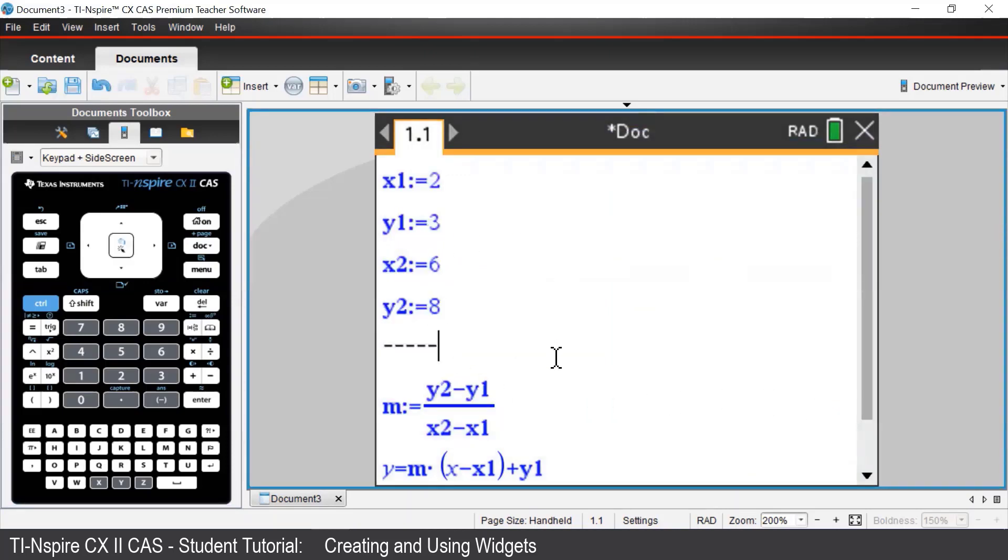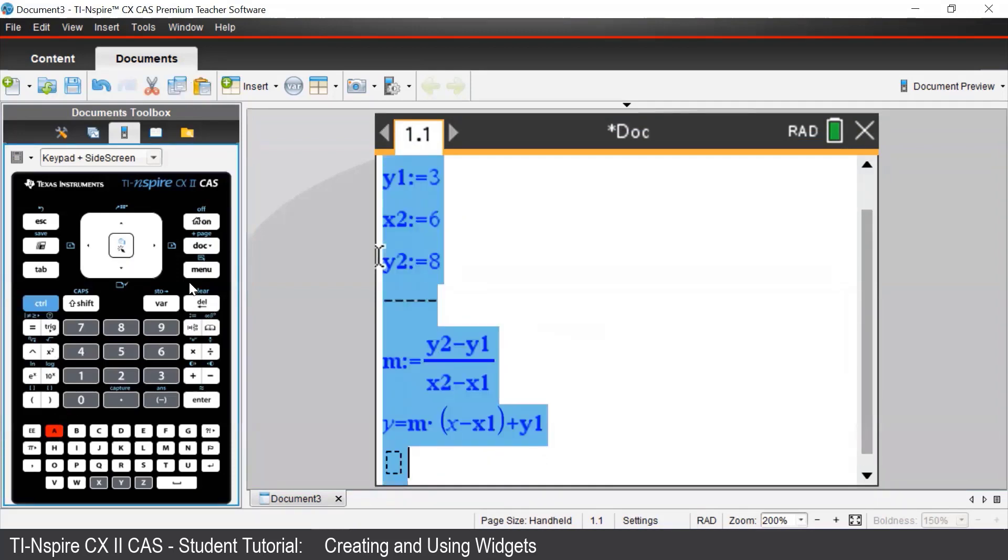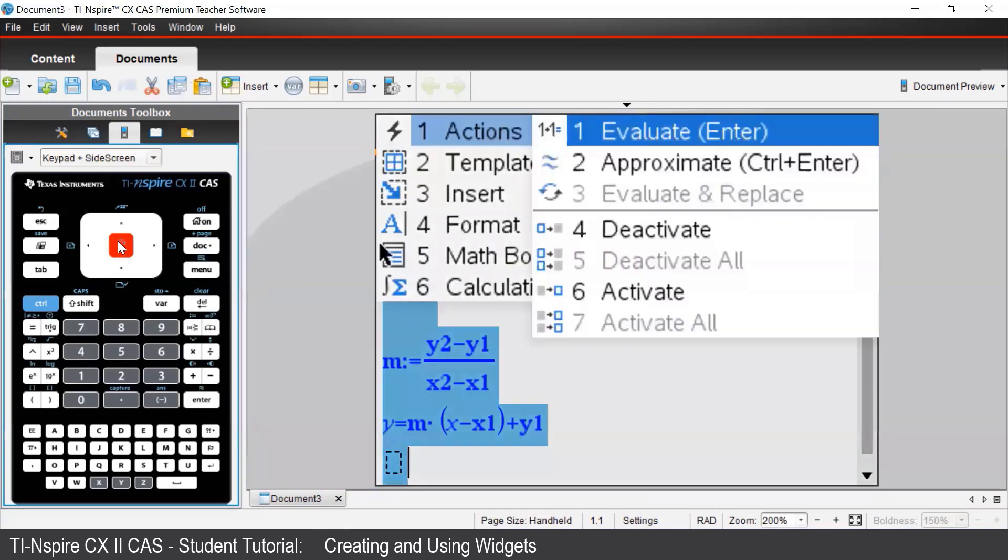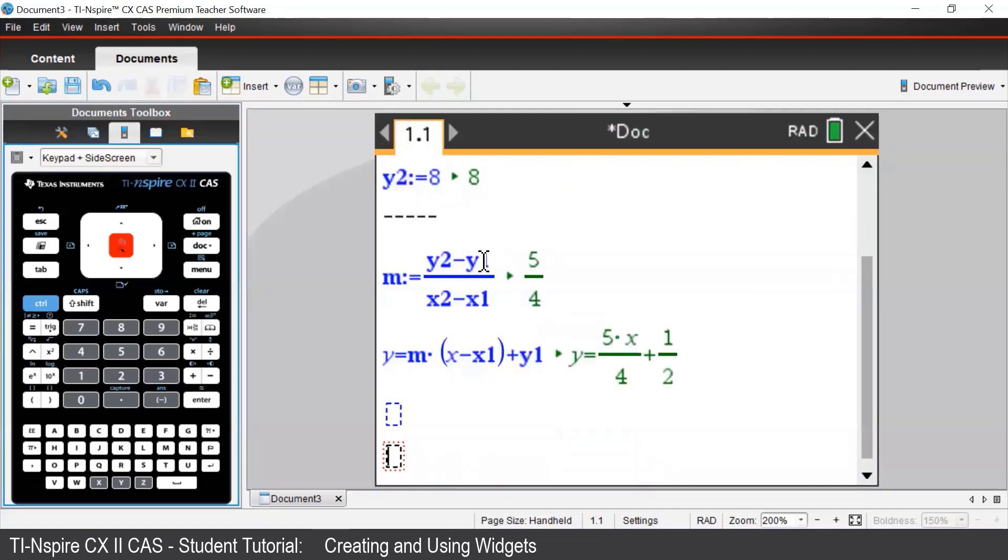Notice how everything here is in blue. If we want to get this file working, we need to highlight everything by pressing control A. And then press menu, actions, evaluate. By doing this, this activates all the math boxes that we have in our document.